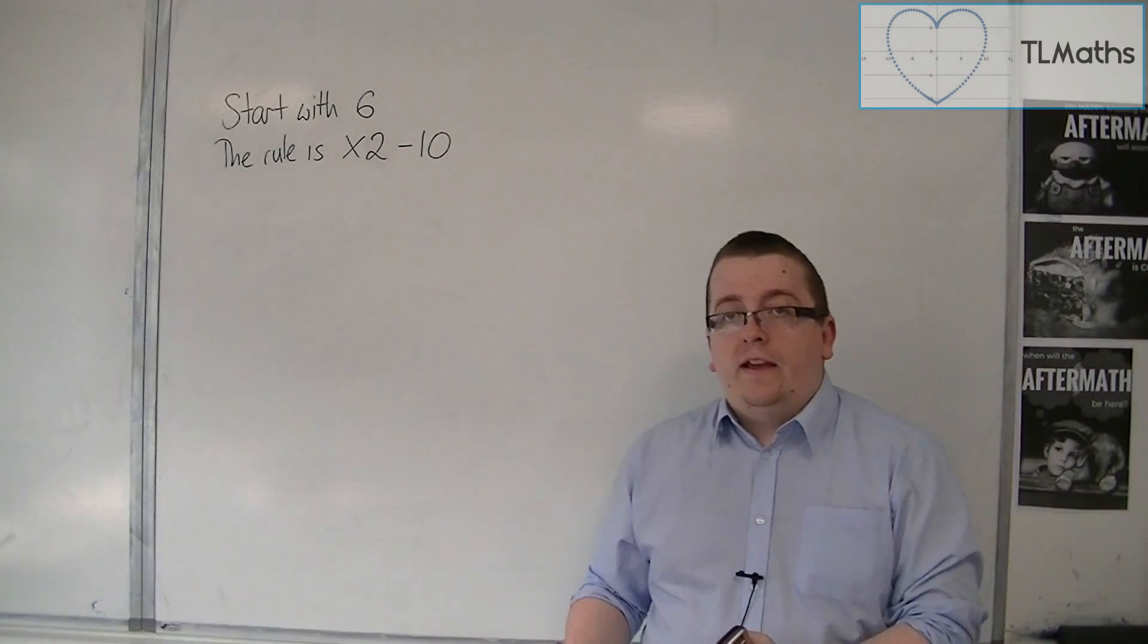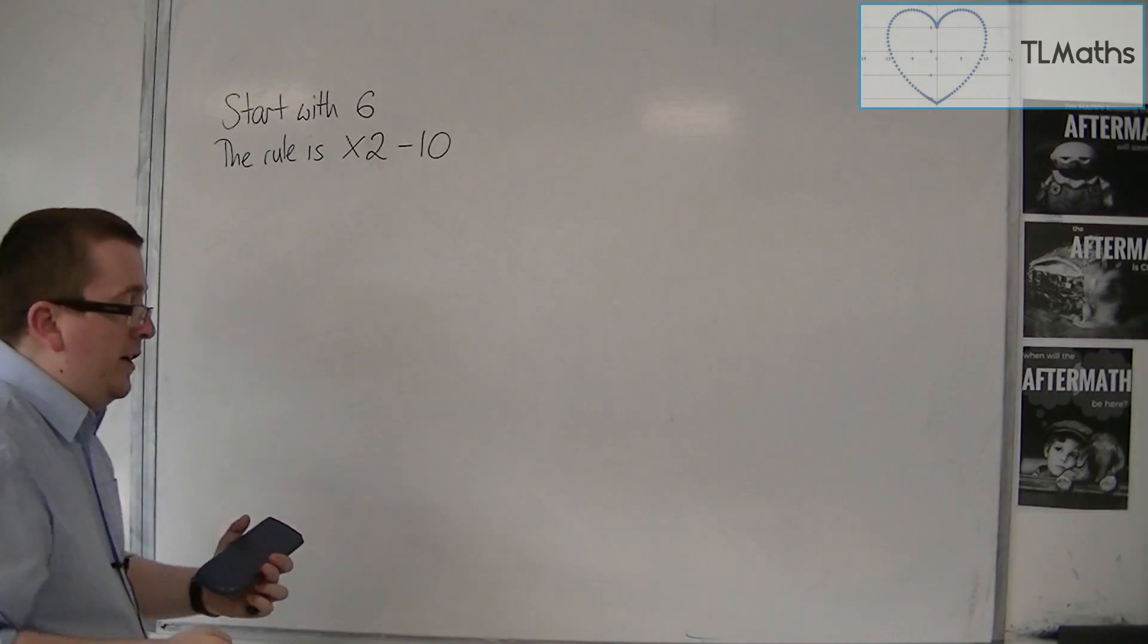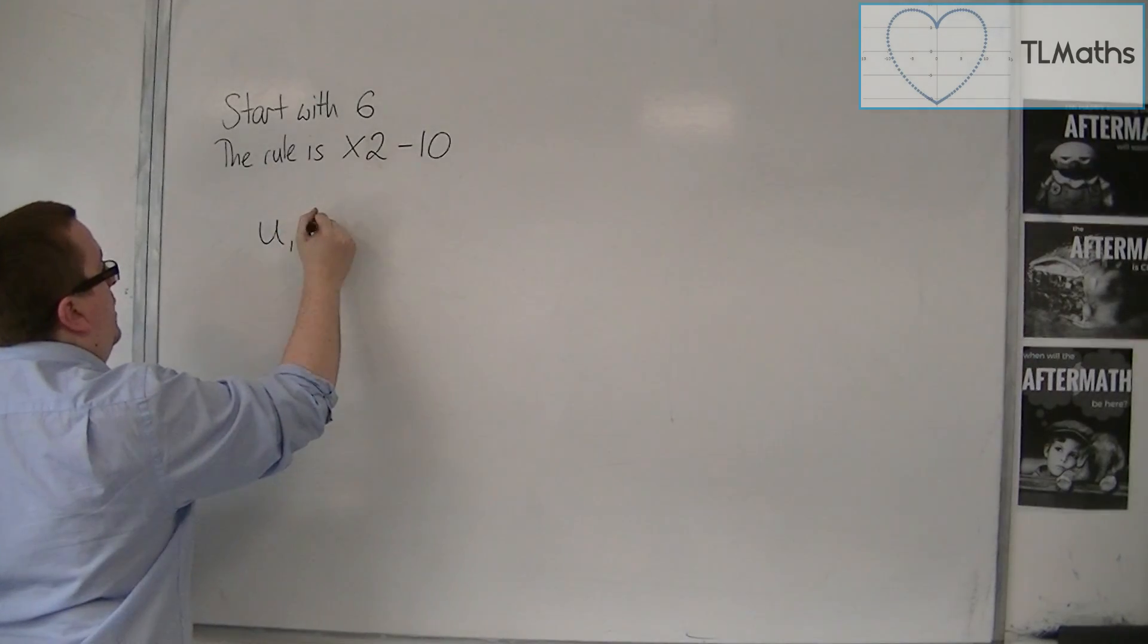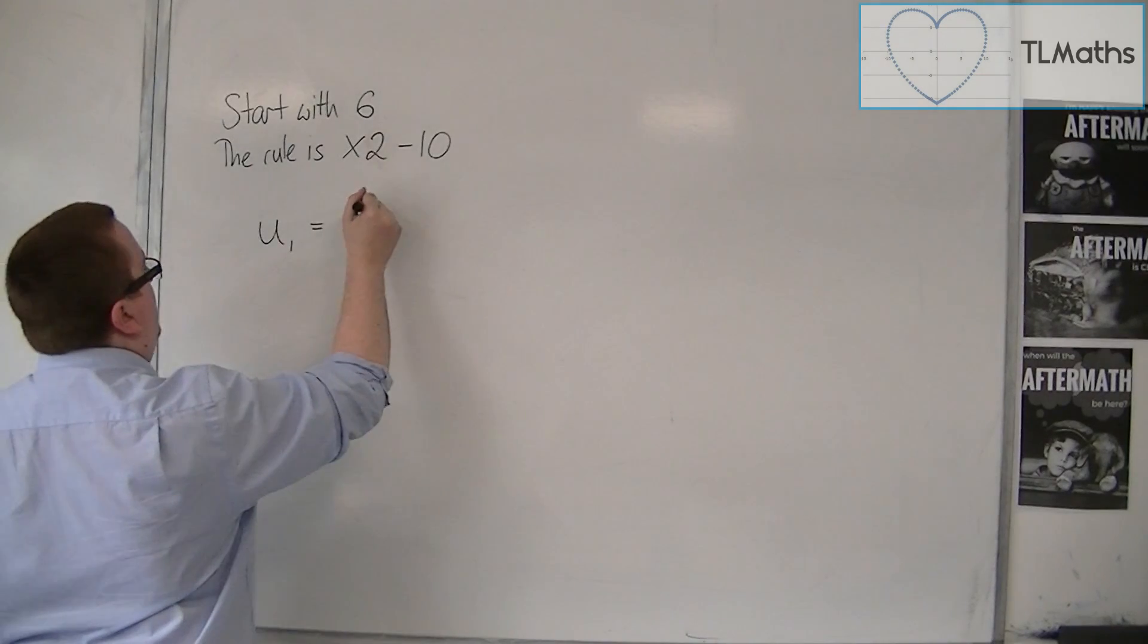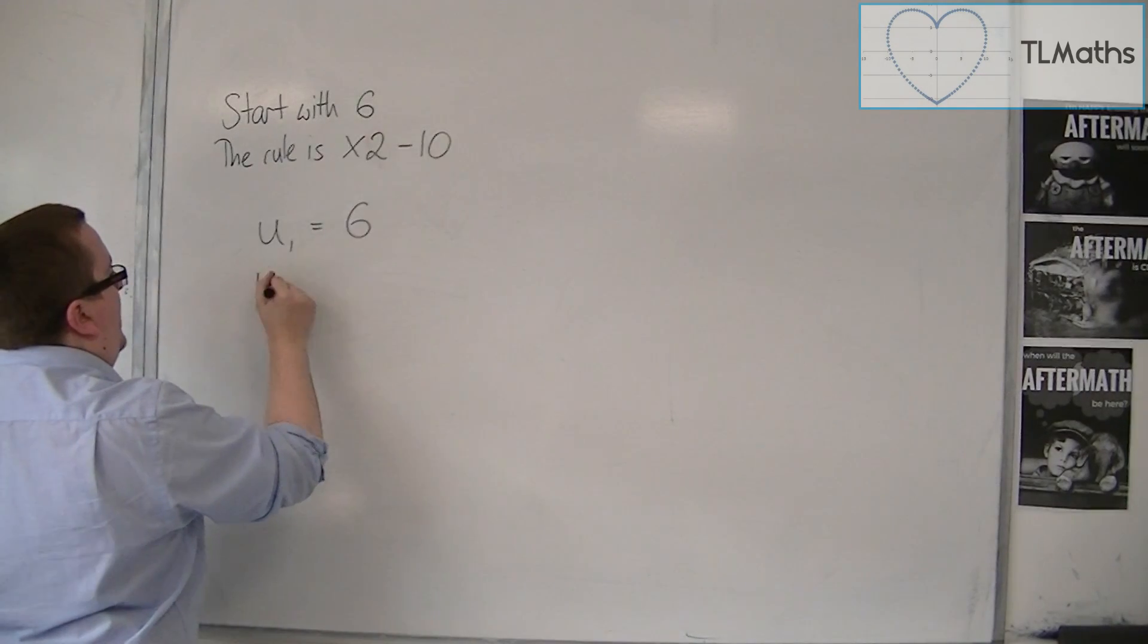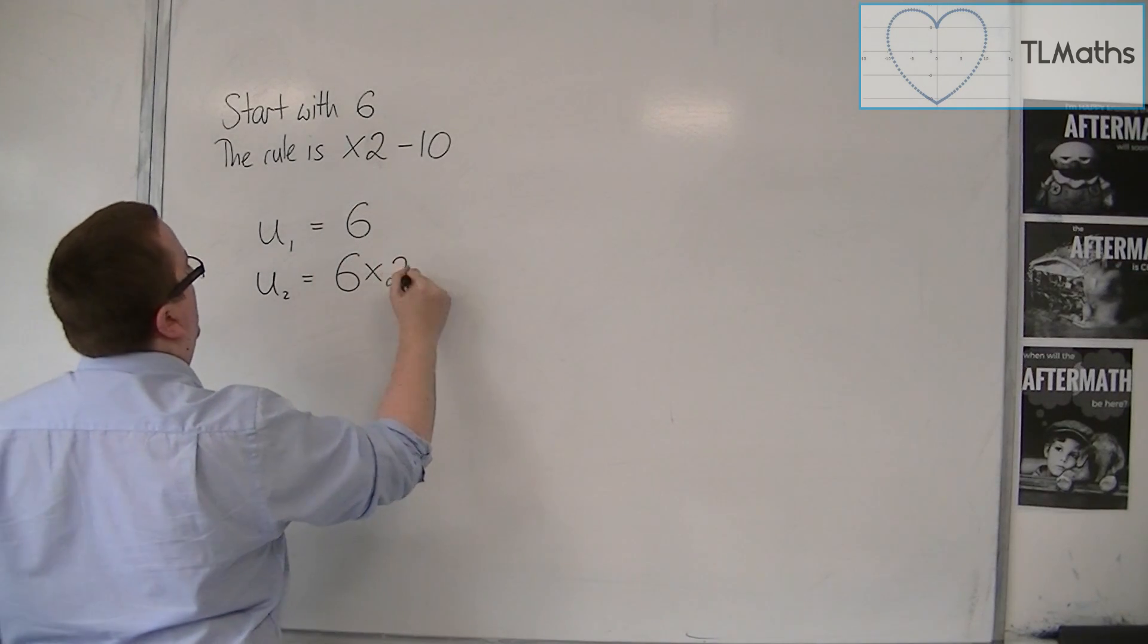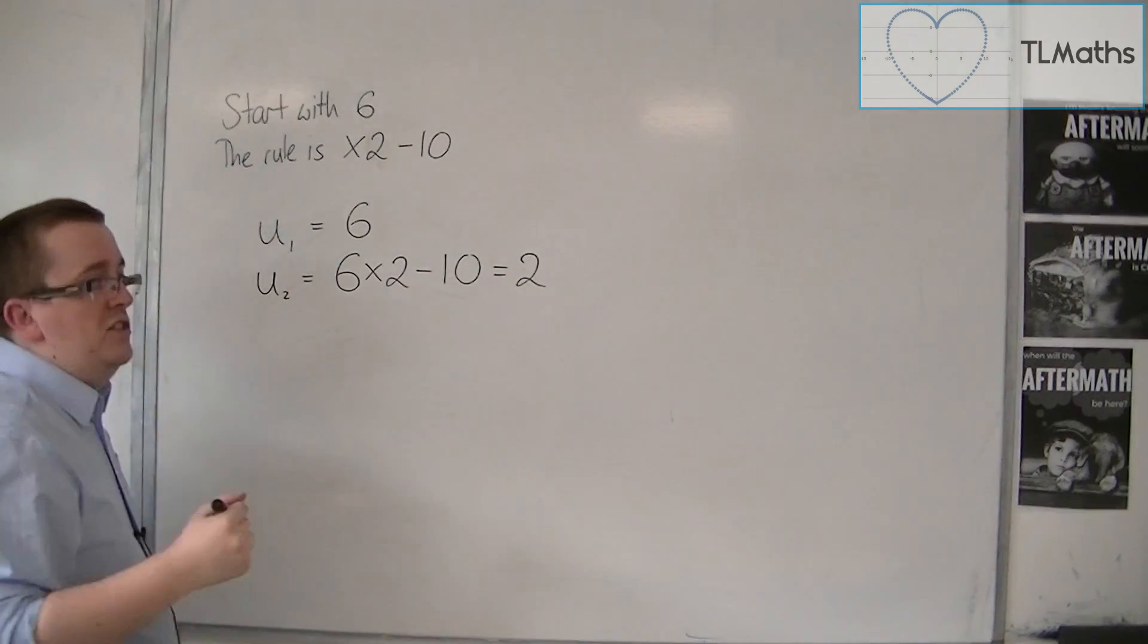Using this, we could start to write down a few of the terms. We would call the first term U_1, and that's going to be 6. So, the second term, I times the 6 by 2 and take 10, and my second term is 2.